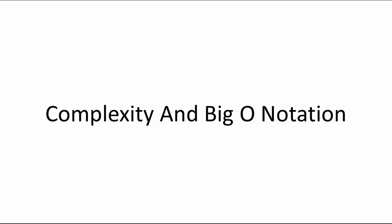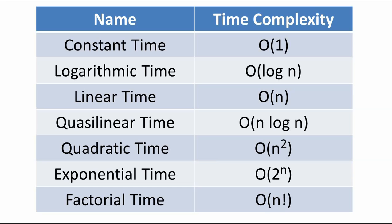Hello students, this is the second part of algorithm and time complexity. In this part we'll be dealing with how complex an algorithm is and how complexity can be denoted by Big O notation. There are many types of time complexity: constant, logarithmic, linear, quasi-linear, quadratic, exponential, and factorial time complexity.